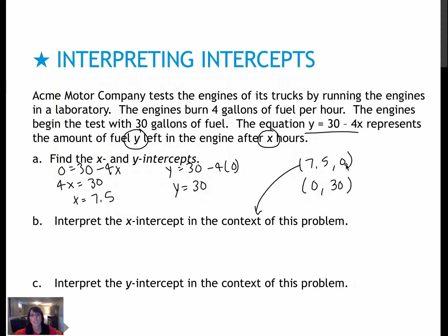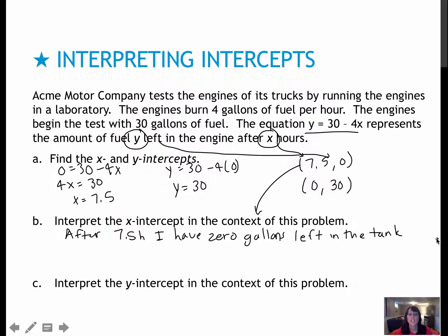So interpreting the x-intercept, which is this one, means that when x is 7.5, y is 0. So after 7.5 hours, I have 0 gallons left in the tank.